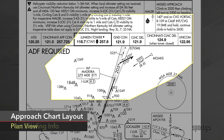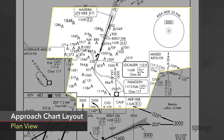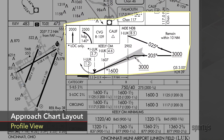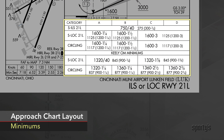For the initial approach segment, the necessary information is in the plan or bird's eye view. The approach has already started when the most pertinent information is in the profile view. The approach is almost finished when the information about how low you can go and the flight visibility required is in the minimum section.